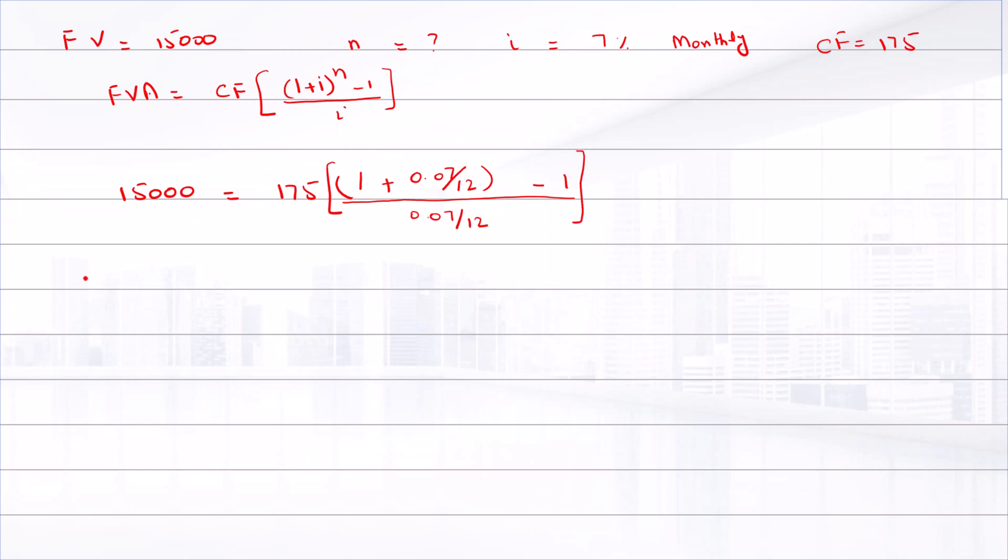We can write this equation as 15,000 equals 175 times (1.0058 raised to power n minus 1) divided by 0.0058.